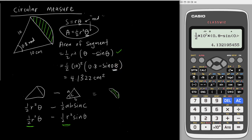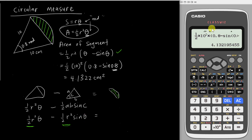Some students might think: if my calculator is in degree mode, can I still key in theta directly for ½r²θ — for example, ½ × 10² × 0.8? Yes you can, because theta here doesn't have any sine, cos, or tangent. So it doesn't matter whether your calculator is in degree or radian for that part.